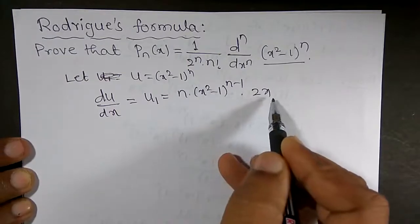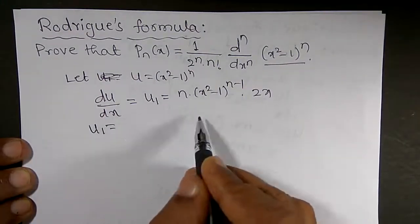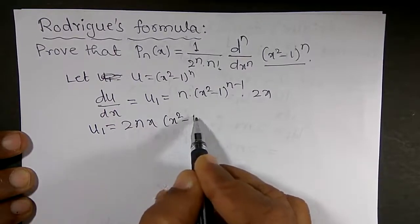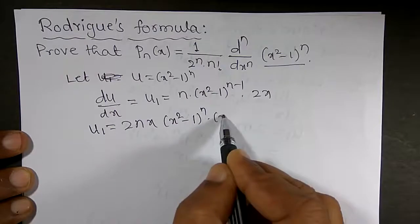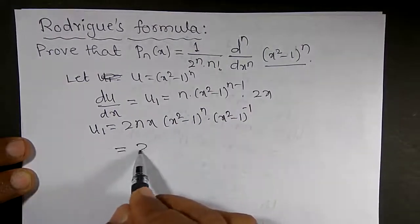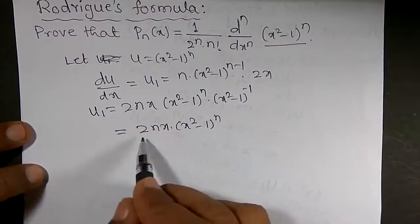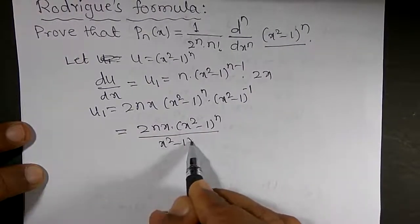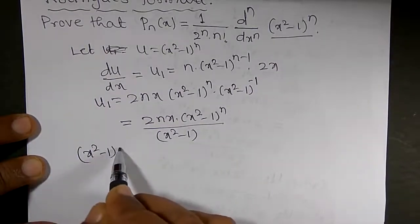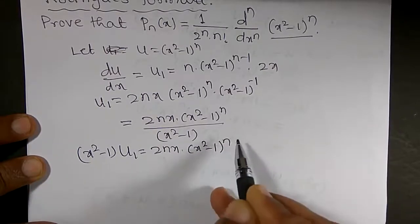The derivative of x squared is 2x, and the derivative of 1 is 0. So u₁ is equal to 2nx times x squared minus 1 to the power n minus 1, which can be written as 2nx into x squared minus 1 to the power n divided by x squared minus 1. Cross-multiplying: (x² - 1)·u₁ = 2nx·(x² - 1)ⁿ.